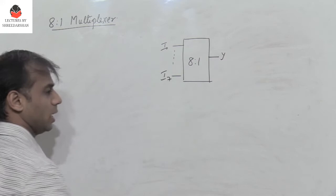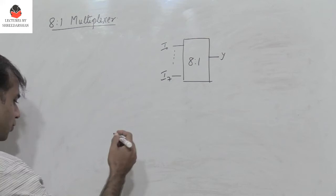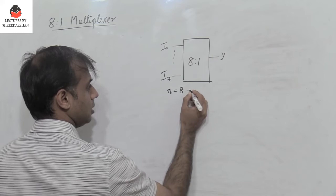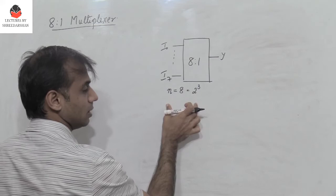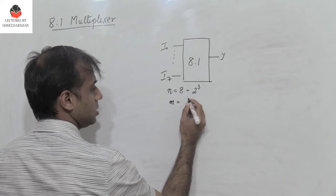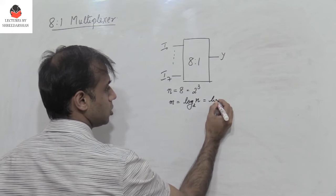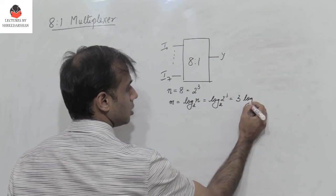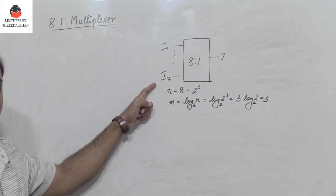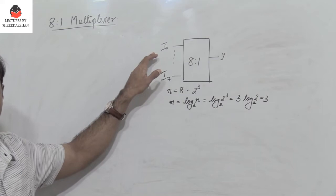Since there are 8 input lines, let the number of input lines be n, which is equal to 8, and this is equal to 2 power 3. We would like to find out the number of select lines. The number of select lines m is equal to log n to base 2, which is log 2³ to base 2, or 3 log 2 to base 2, which equals 3. So since we have 8 input lines, I need 3 select lines to select one of them. Let the select lines be s0, s1, and s2.